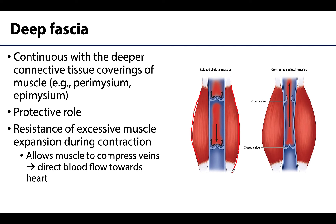This helps with the directionality of venous flow, as blood is pushed through the veins of the muscles and the compartments are compressed during contraction. The fascia keeps contraction within the compartment, which appropriately compresses the veins. The valves within the veins allow blood to flow in the correct direction — toward the heart — and prevent backflow.